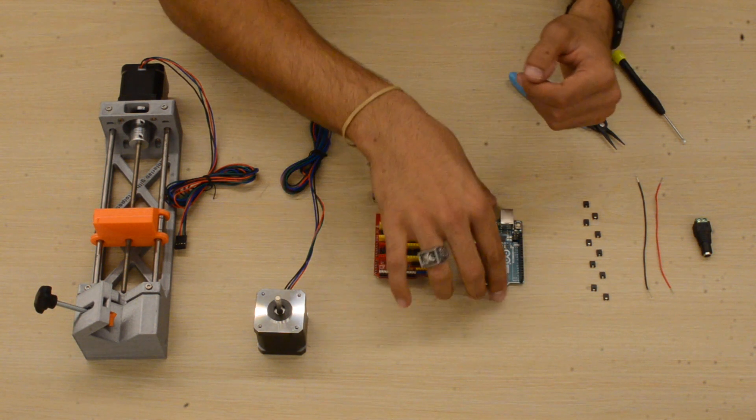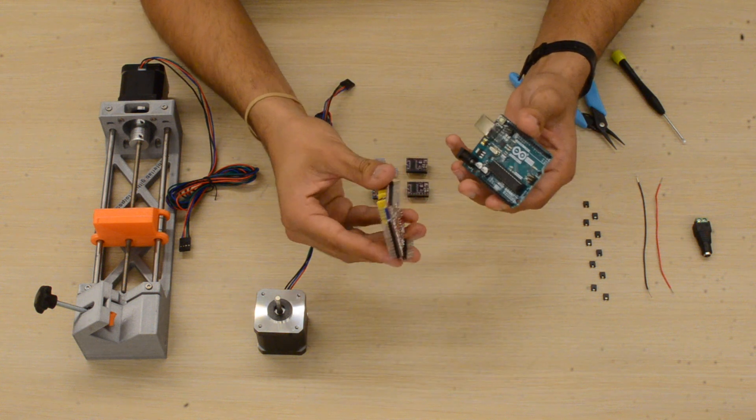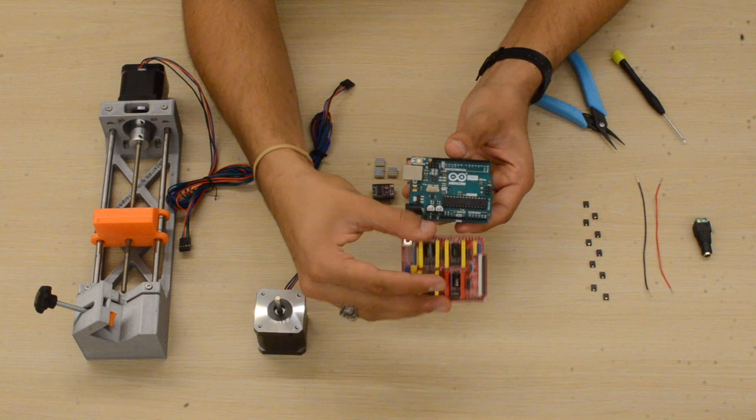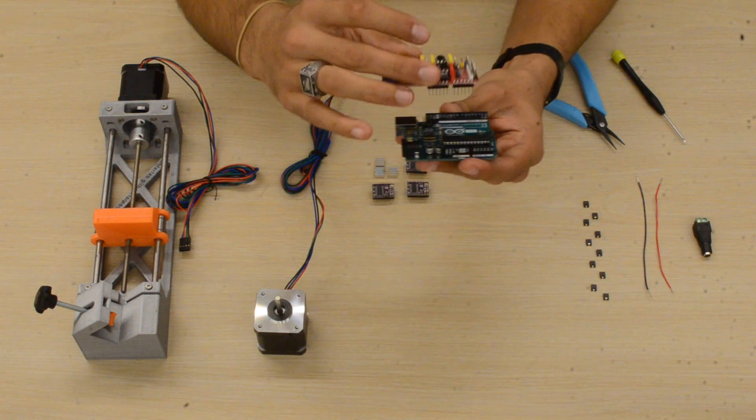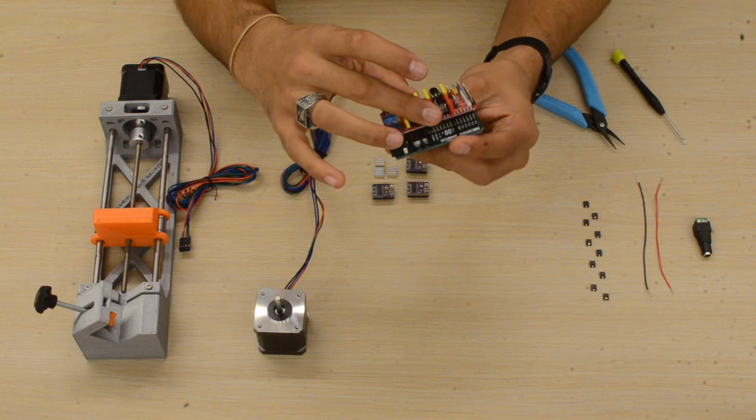First, grab the Arduino Uno and the CNC shield. Plug the CNC shield into the Arduino Uno according to the pins—it's pretty straightforward, they should align very easily. Once aligned, push the two boards together.